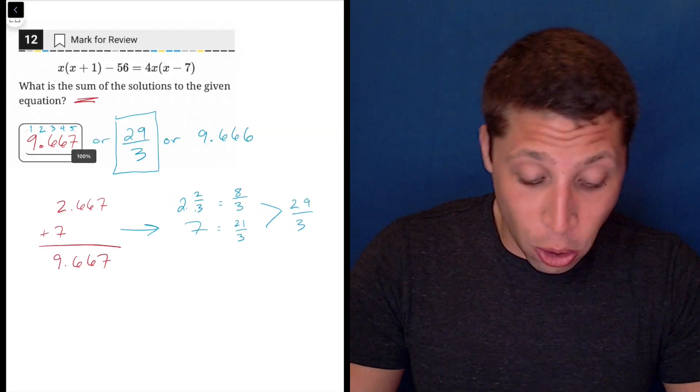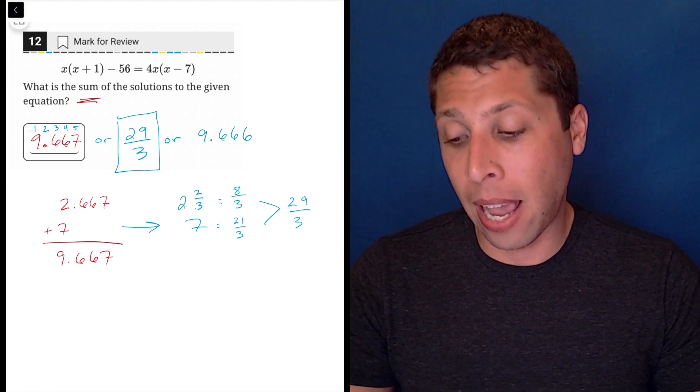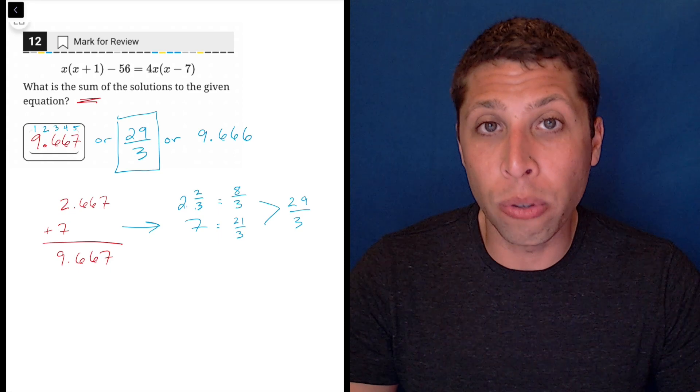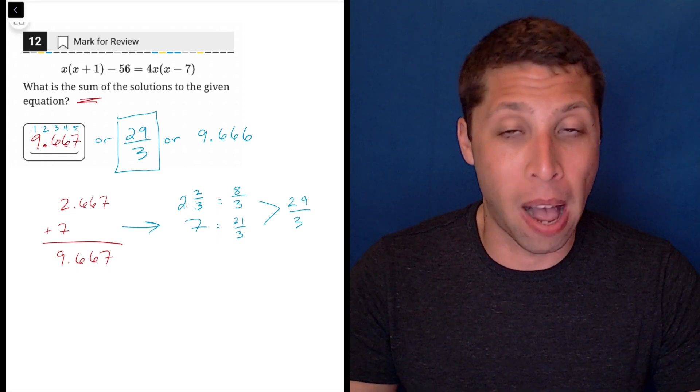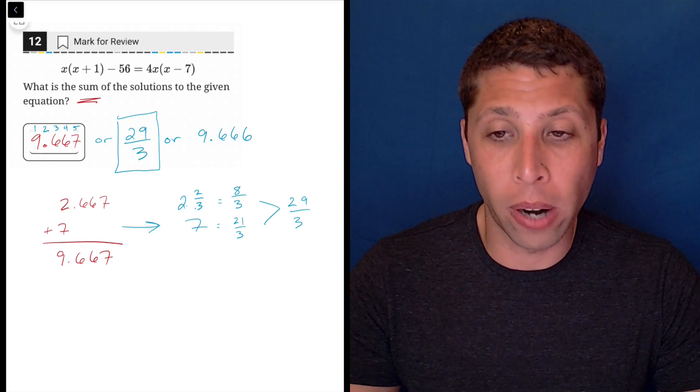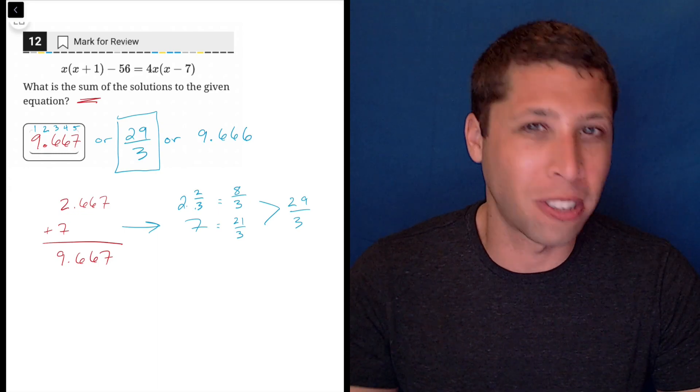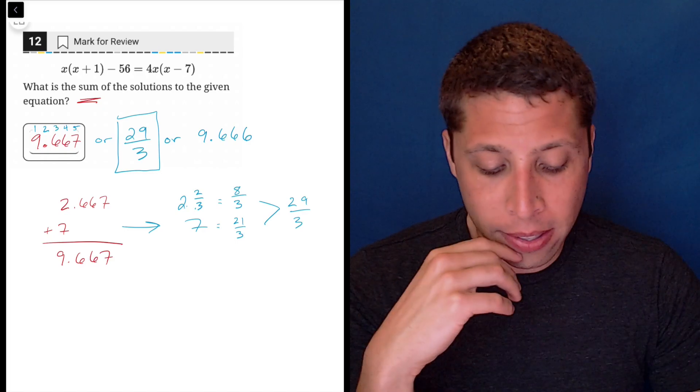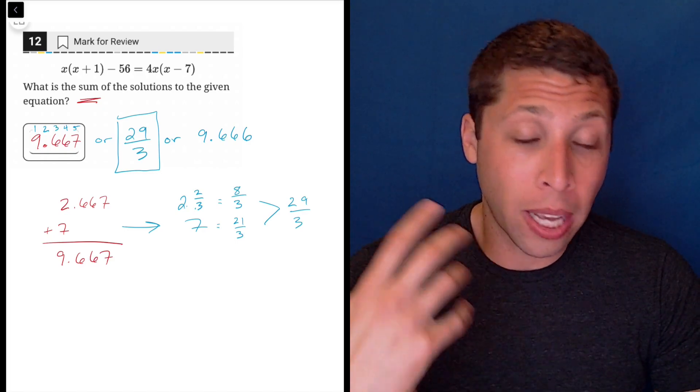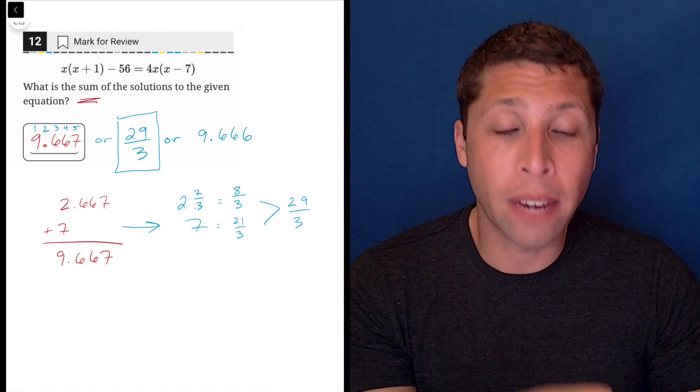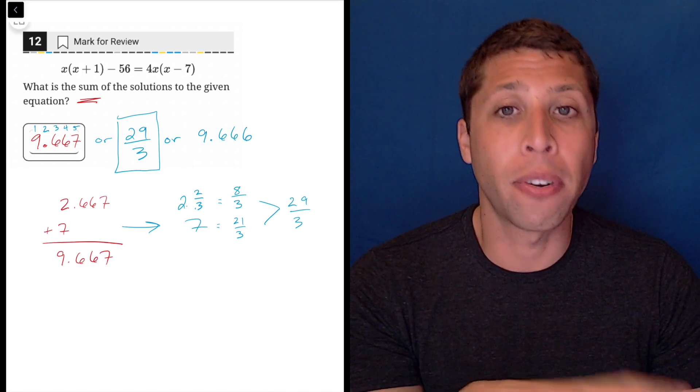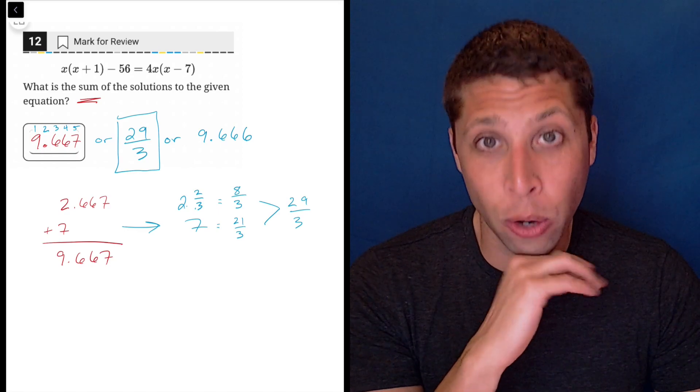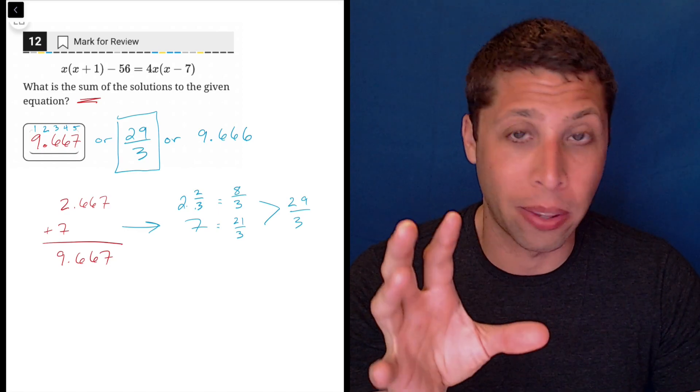Look, this is an annoying thing. If you practice, you will encounter this, and maybe at some point you will get a question wrong on a practice test because you don't use the student produced response boxes effectively for a weird fraction with thirds or sixths or something else that kind of repeats. If it's bothering you, then maybe just get in the habit of doing what I do and returning everything back to fractions. It's safer.